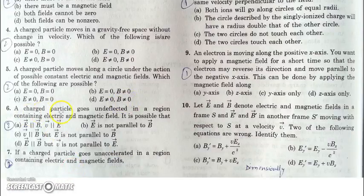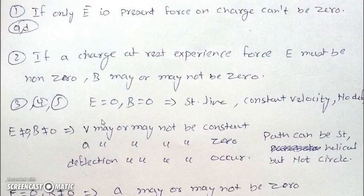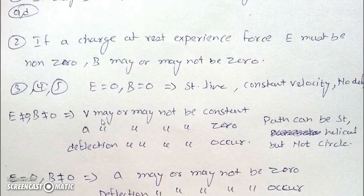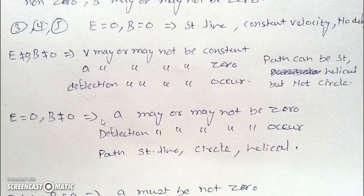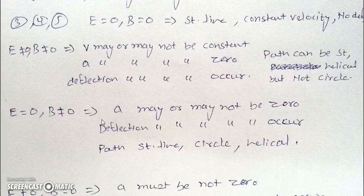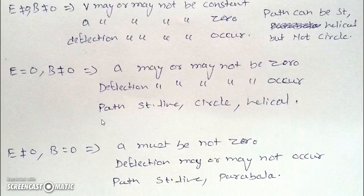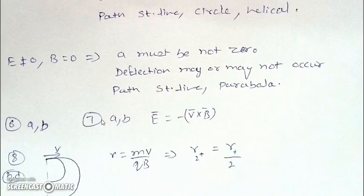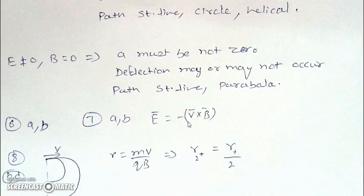In the next part, a charged particle goes undeflected in a region containing electric and magnetic field, so this result must be followed. I have explained a few cases — you can have a look at the PDF which is given in the link below in the description. In question number seven, if a charged particle is undeflected in uniform electric and magnetic field, this expression must be followed: qE cancels qv × B, q is cancelled, giving E = -v × B.